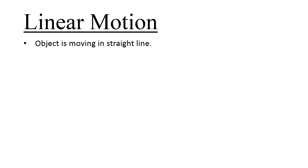Hi again. For this lesson, we will learn about linear motion. There are two criteria we need to remember for linear motion. The first one: the object must be moving in a straight line. And the second: the moving object must be in constant acceleration.